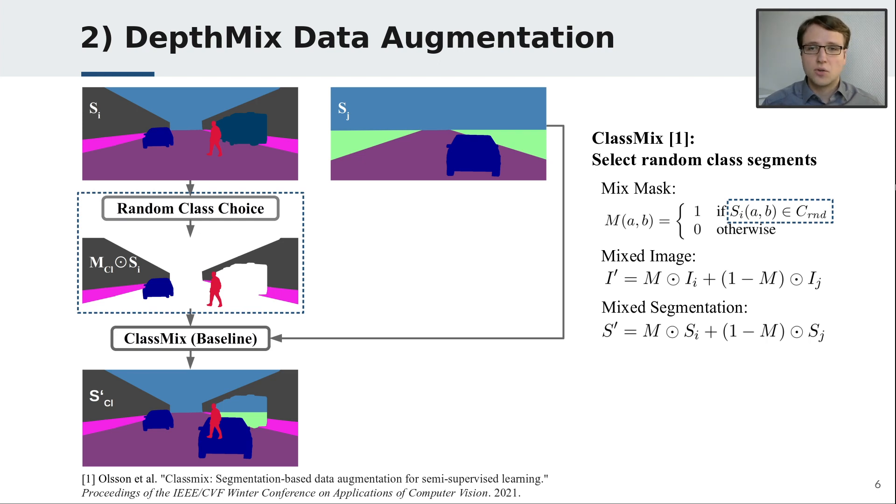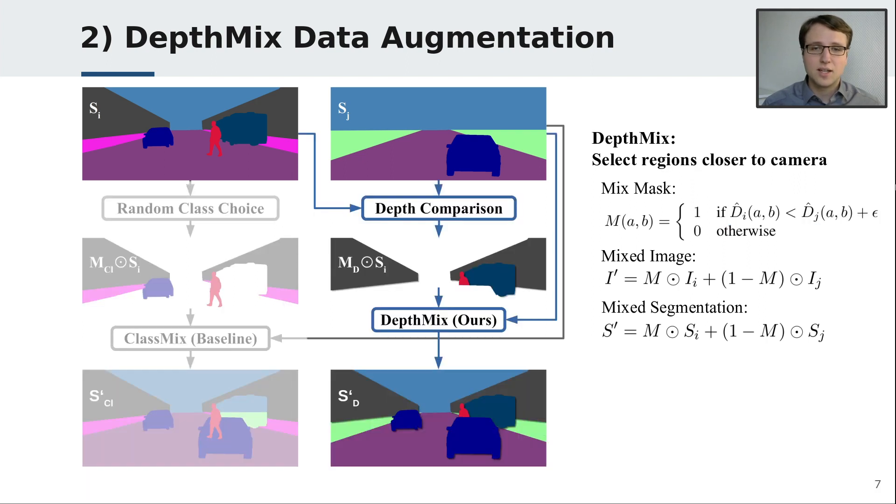However, previous works do not consider the geometry of the scene, which results in holes left by missing occluders and missing occlusions. Our proposed DepthMix mitigates these artifacts by using self-supervised depth estimation for the mixing. It selects regions that are closer to the camera to correctly model occlusions.